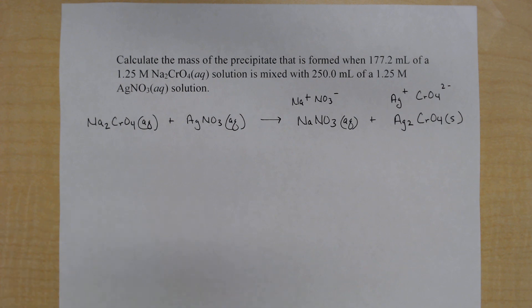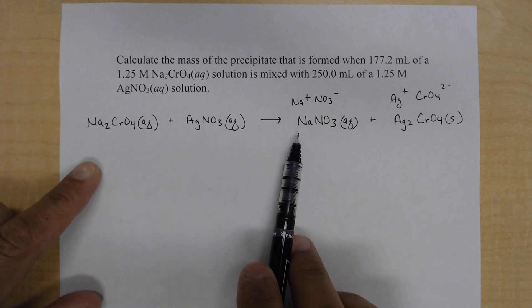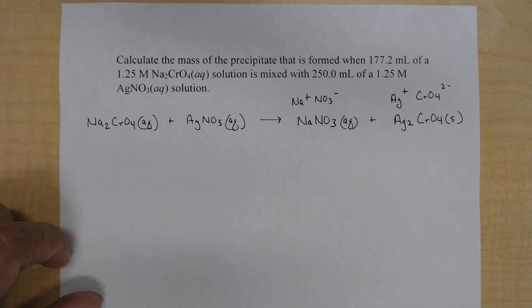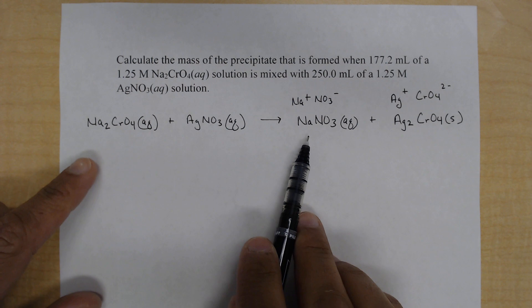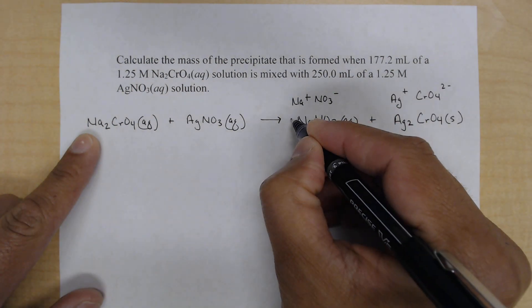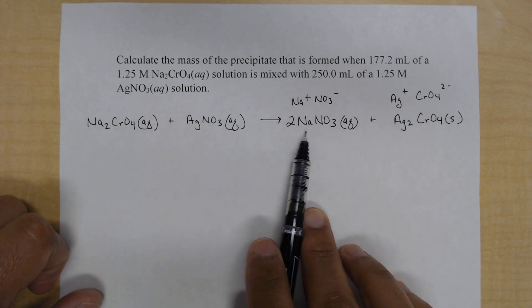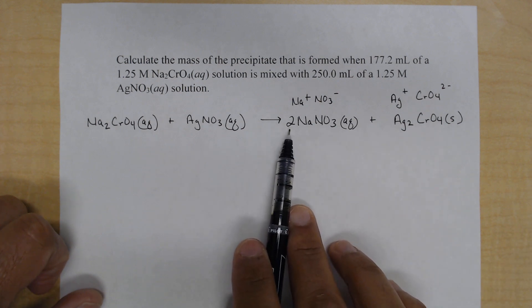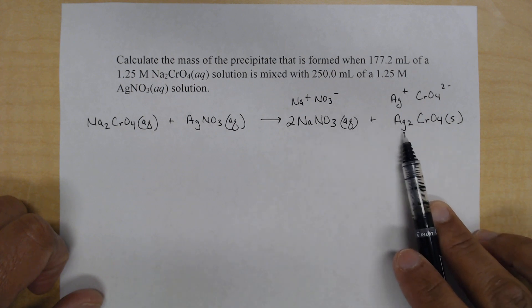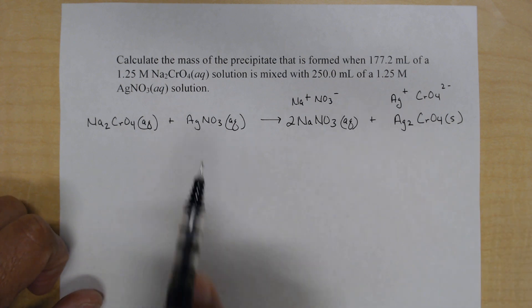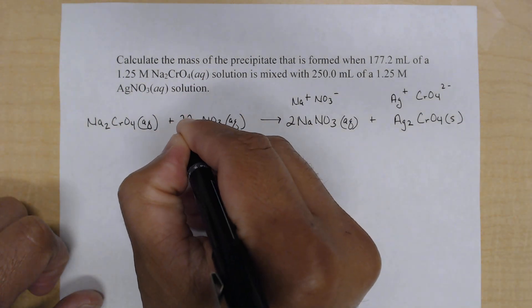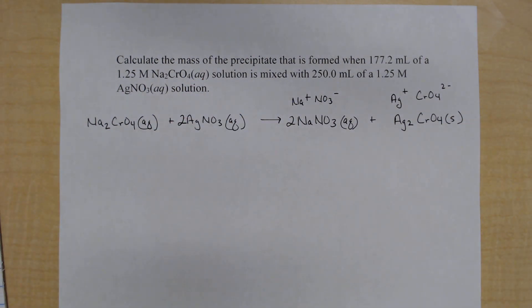Next to do our stoichiometry we need a balanced equation. So we'll go ahead and put our coefficients here. I'll refer you to an earlier video or earlier to balance equations. So here we've got two sodium and on the product side we have one sodium. So I'll start by balancing the sodium ions. We'll put a two here and then you notice that that changes our moles of nitrate. Two moles of nitrate. We also have two moles of silver here so we can balance the silver and the nitrate by putting a coefficient of two here. So now we have a balanced equation.